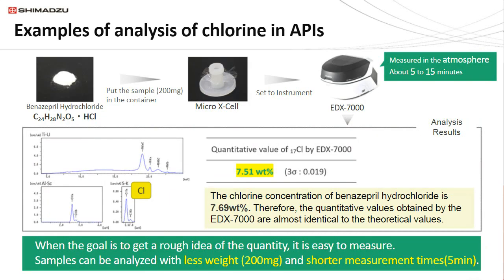This is the API benazepril hydrochloride. We took a very small amount of sample — 200 milligrams — and put it into a sample cup designed for low sample volumes called a micro X cell. The goal of this analysis was to measure chlorine content without external standards, using a standardless method called the fundamental parameter method. The chlorine content we got was 7.51%. The actual content of this API is 7.69%, so nominally within 0.2 to 0.3% of each other.